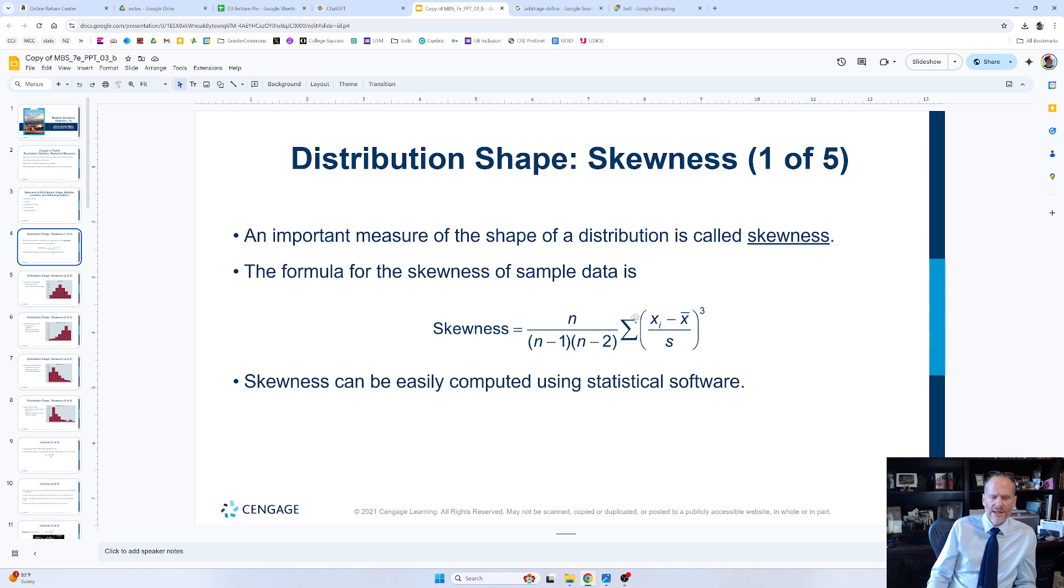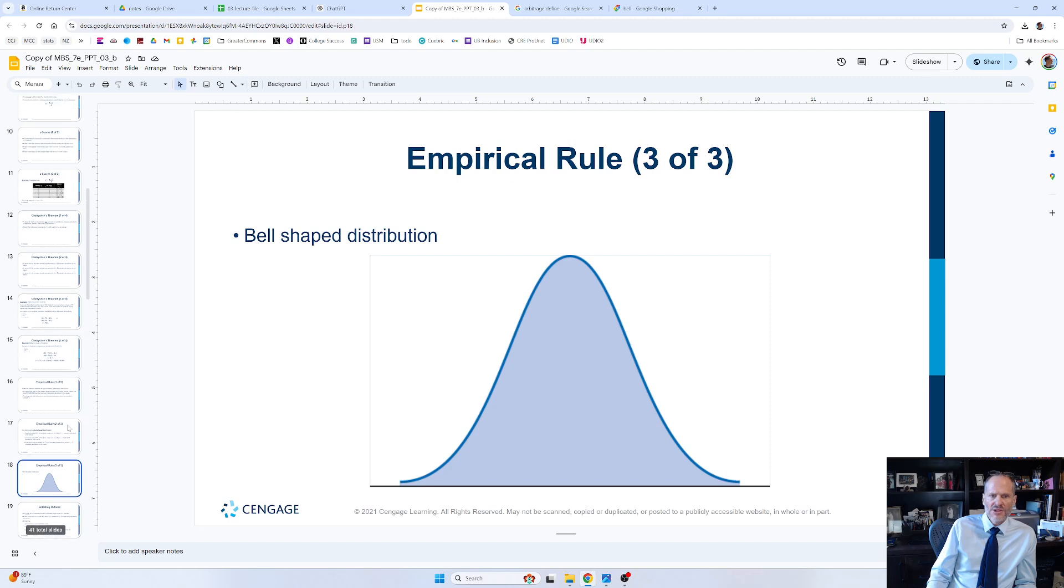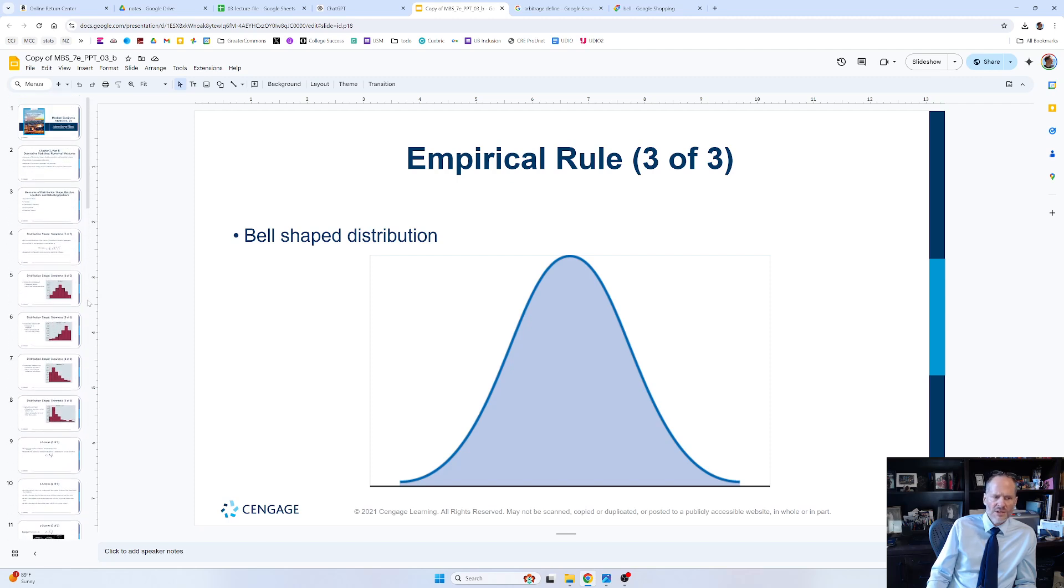We're not going to worry about it in this class. Just want to expose you to it, make sure I cover it because it's in the textbook. You might have to do a problem or two with it. But important to measure the shape of distribution. The distribution is how is the data distributed. So this is one way the data can be distributed. It can be a bell-shaped curve. It can be the normal distribution.